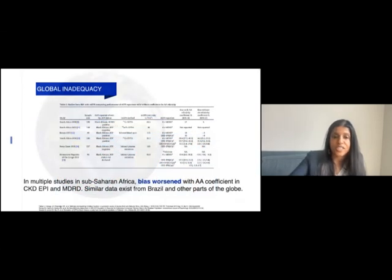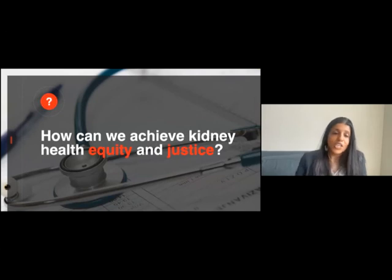What implications does this have on a global scale? If by race we're talking about people with a similar genetic link, we're not hitting the mark. In sub-Saharan Africa, the bias associated with using the Black race coefficient from CKD-EPI actually worsened with use of the race coefficient. Similar data exists from Brazil and other parts of the globe.